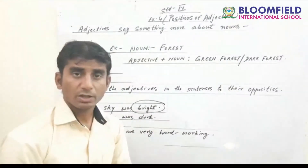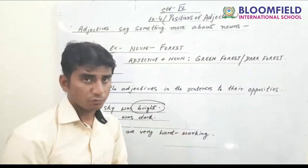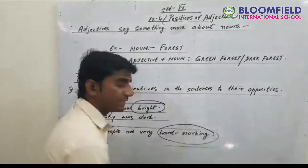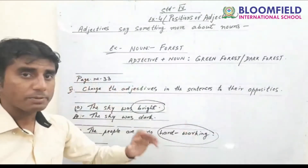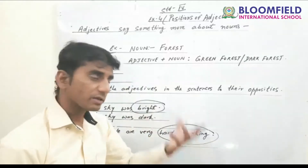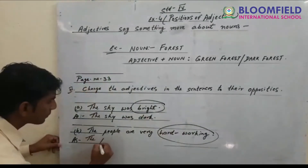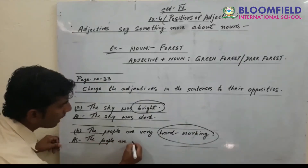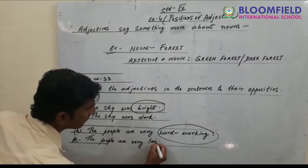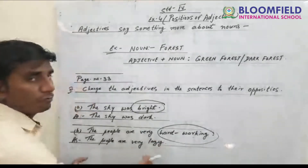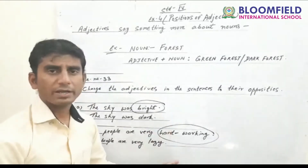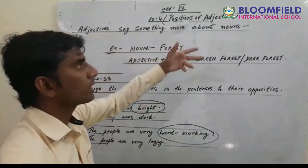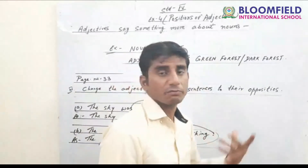Next example: 'The people are very hard working.' First, find the adjective — 'hard working' is the adjective. The opposite of hard working is lazy. So the answer is: the people are very lazy. It is very easy, guys.